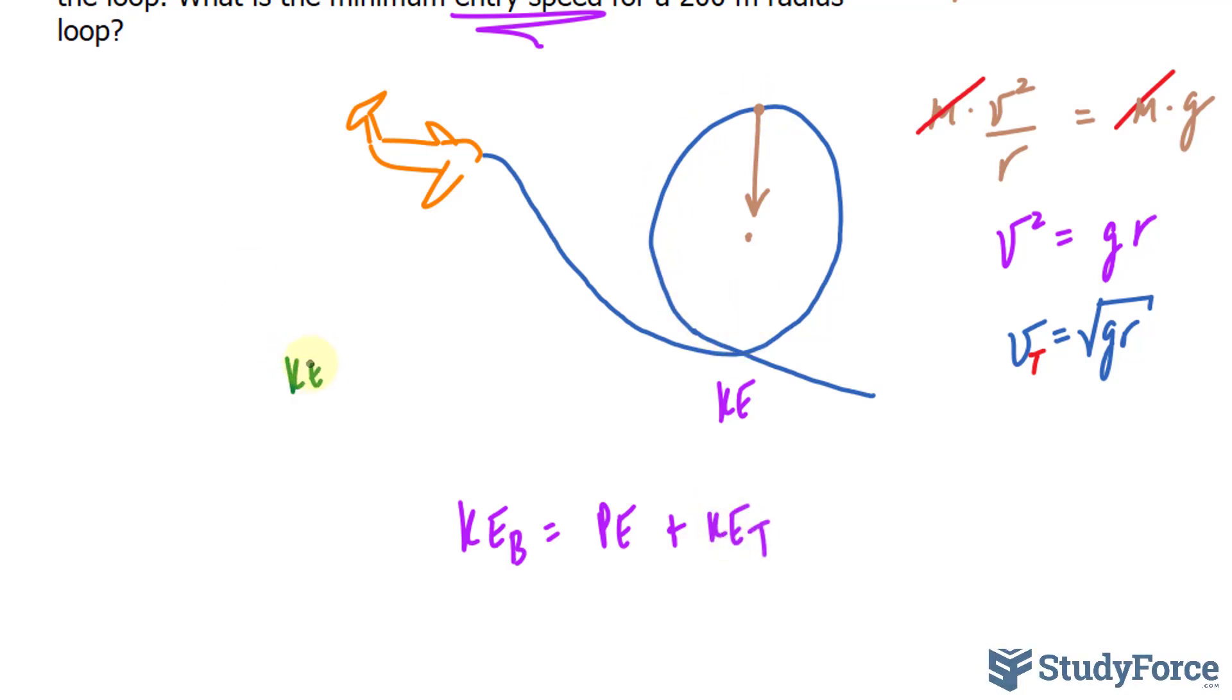The formula for kinetic energy, as we've learned in the past, is half times mass v to the power of two. And since it's the kinetic energy at the bottom, this v will be represented as the entry speed. Potential energy is calculated by taking the mass times the acceleration due to gravity times the height that exists here. And the height that exists is from here to here, that's the diameter, or in other words, two times the radius.